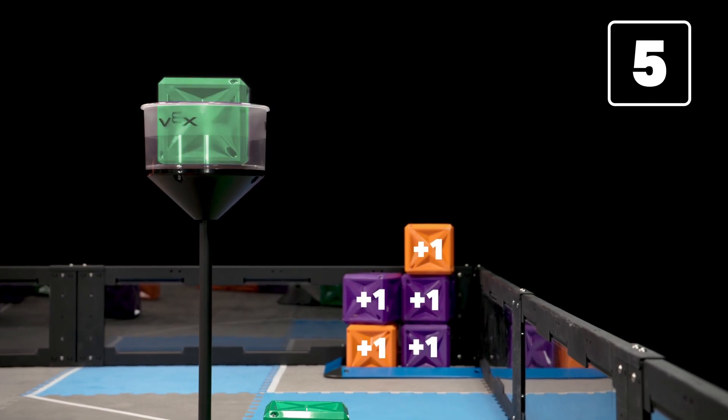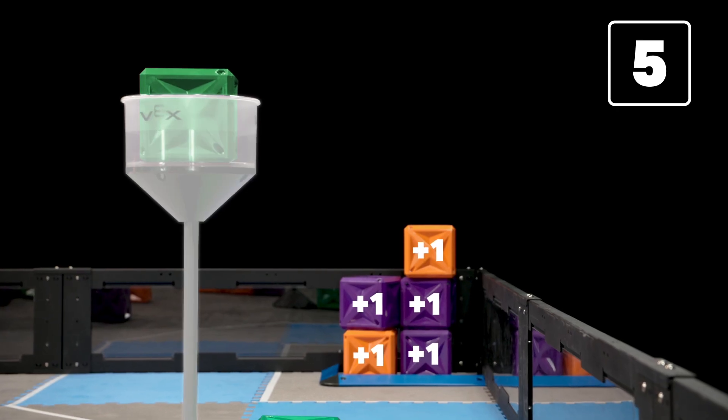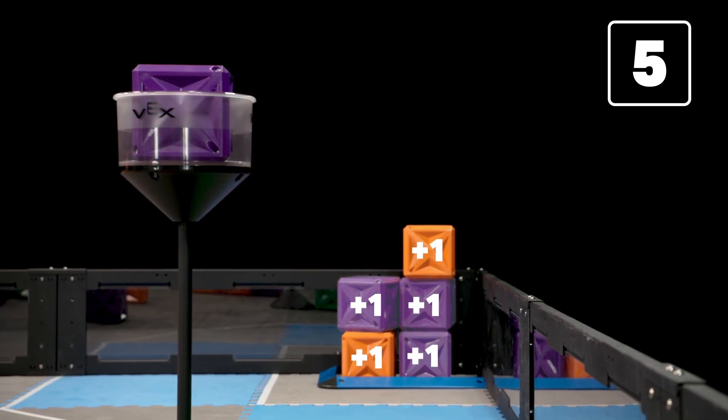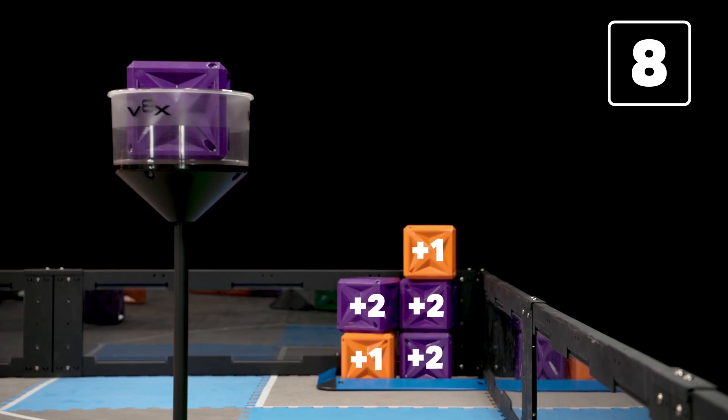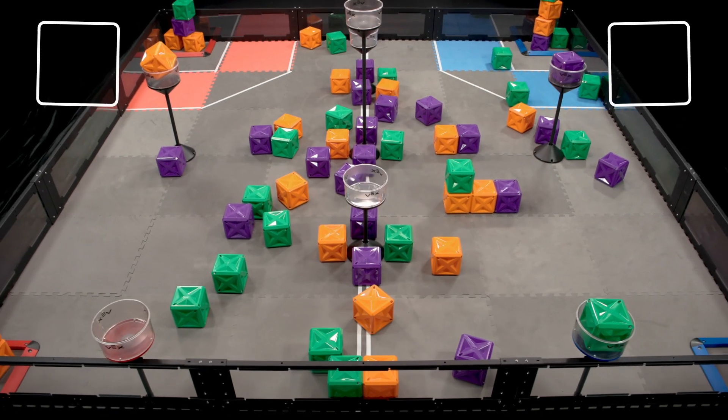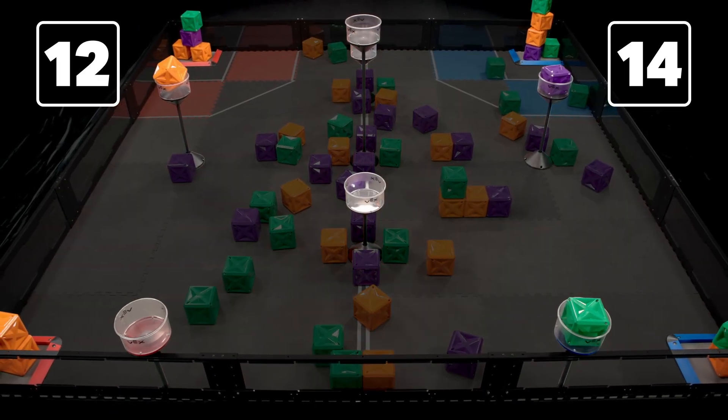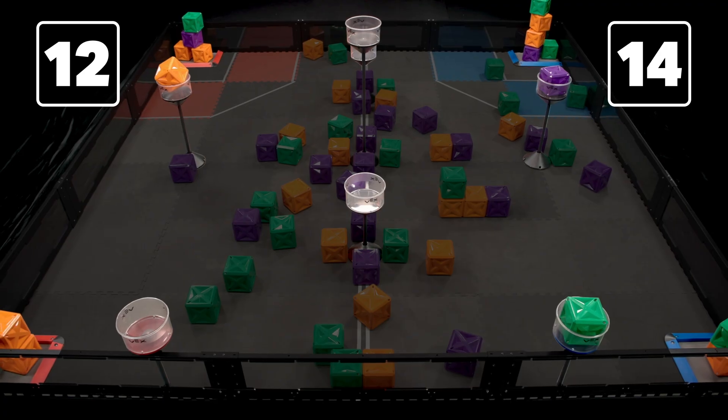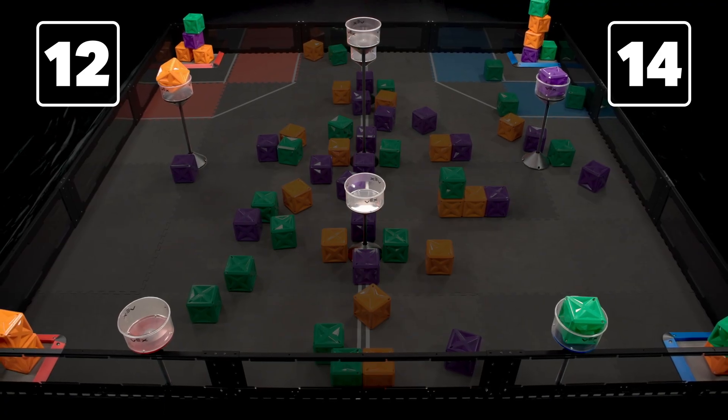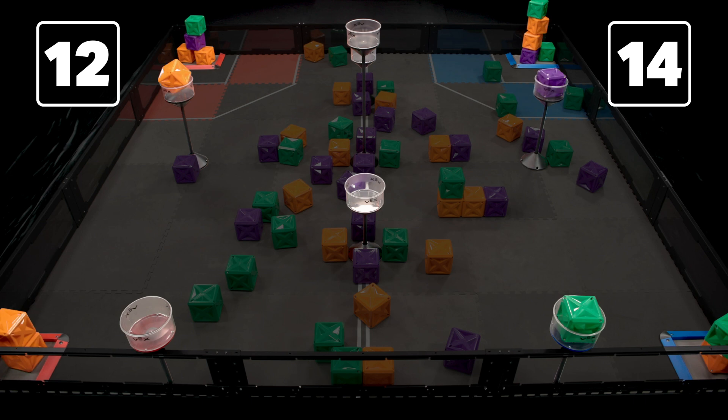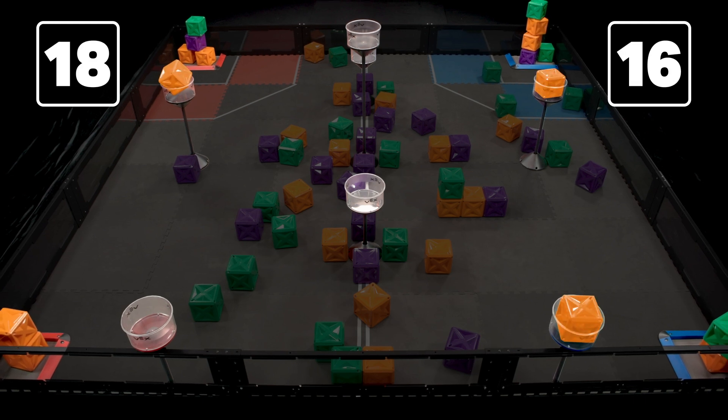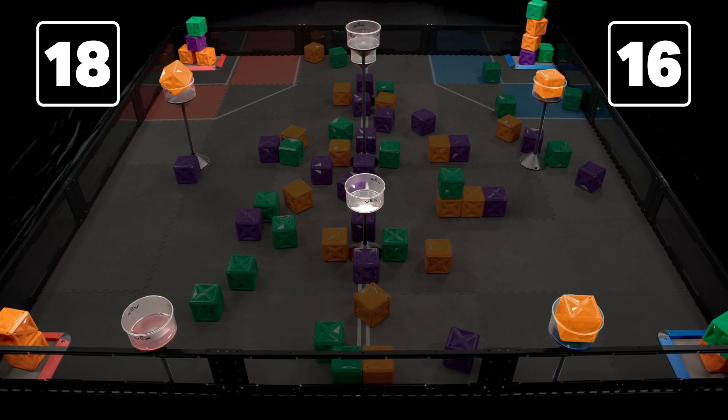Then, each additional cube of that color that has been placed in a tower increases the point value of that color's scored cubes by one point. This means that although cubes in towers are not worth any points by themselves, the value of scored cubes in goal zones may change throughout the match. When cubes are placed in or removed from towers, the new values apply to all cubes.